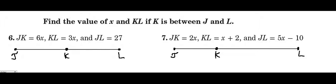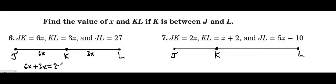So here, jk is 6x, kl is 3x, and jl is 27. We know that 6x plus 3x is equal to 27, because jk plus kl equals jl — the total.